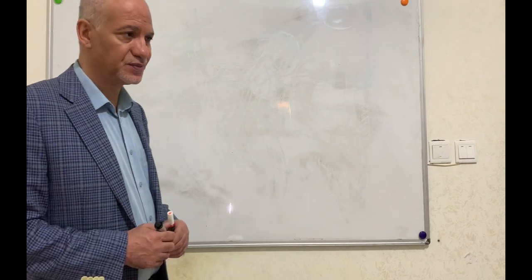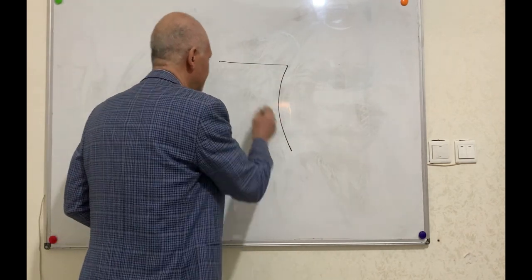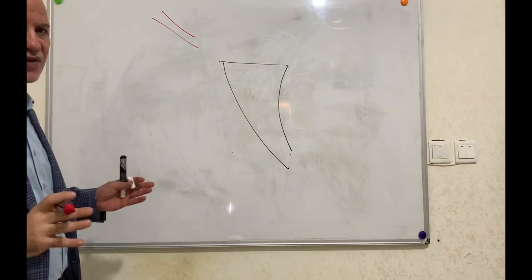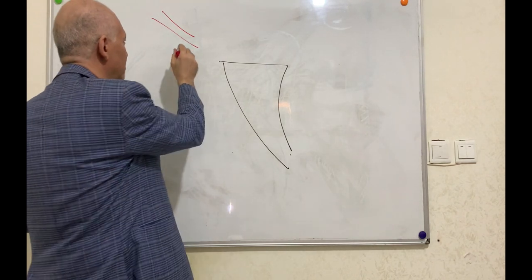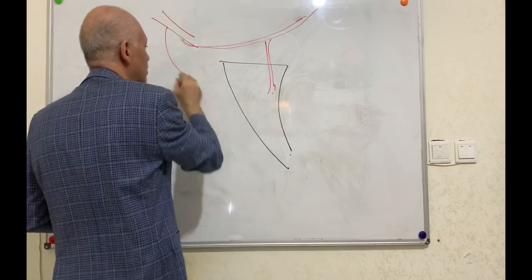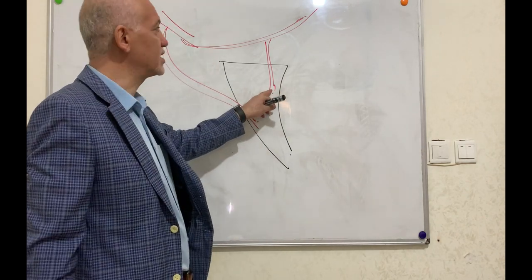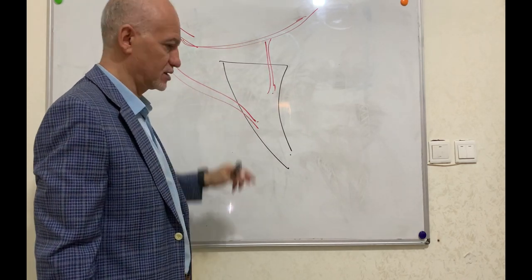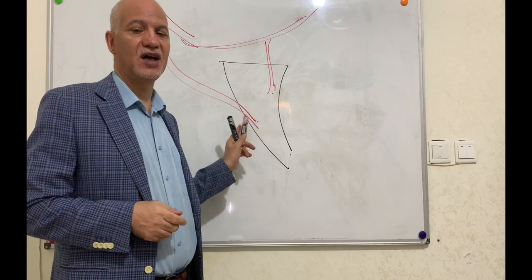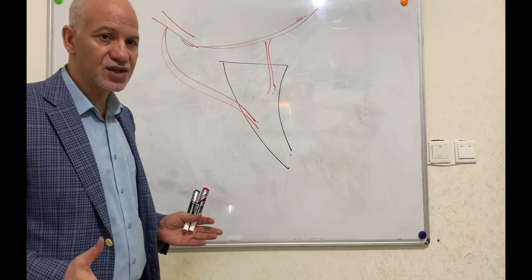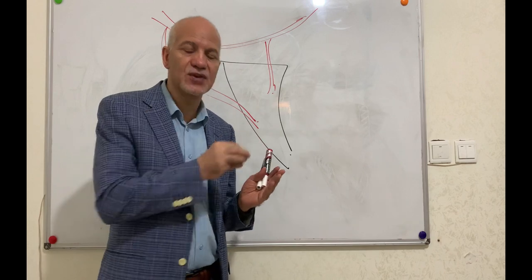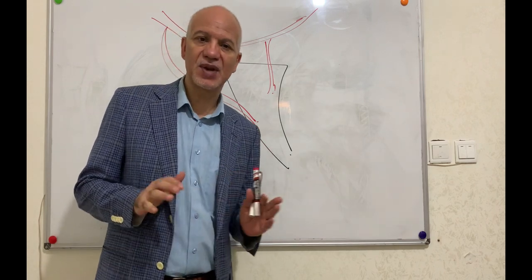Blood supply of the urinary bladder: the internal iliac artery, specifically the anterior division, gives a branch called the umbilical artery, which gives the superior vesical artery. Also the inferior vesical artery arises from the internal iliac. In female, there is no inferior vesical artery. Venous drainage: the veins of the bladder form a plexus and drain into the internal iliac vein.